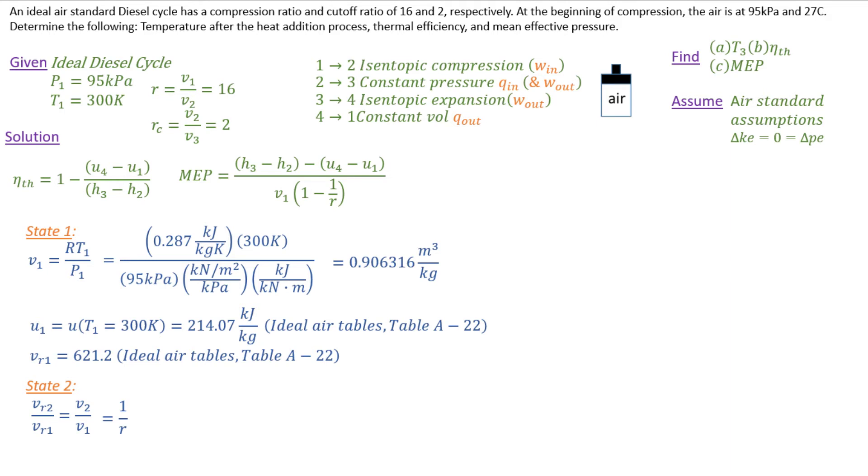And once I have VR_2, I look at my thermal efficiency and mean effective pressure equations and I see I need to get the H value, so I interpolate for H2.